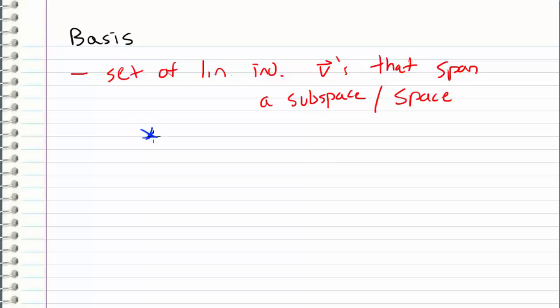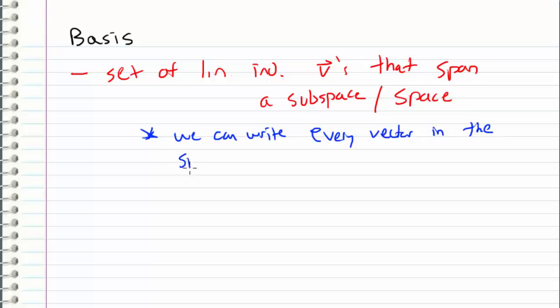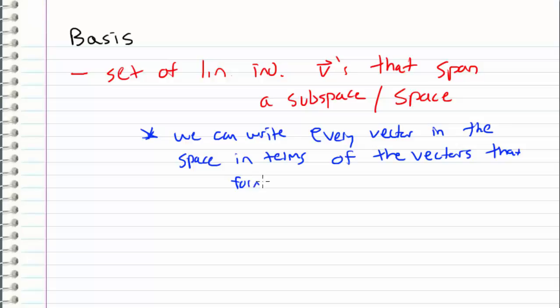Since these vectors are linearly independent, we can write every vector in the space in terms of the vectors that form the basis. So every single vector in a space or subspace can be expressed as a linear combination of the basis vectors. That's why I refer to a basis as the bones of a subspace.